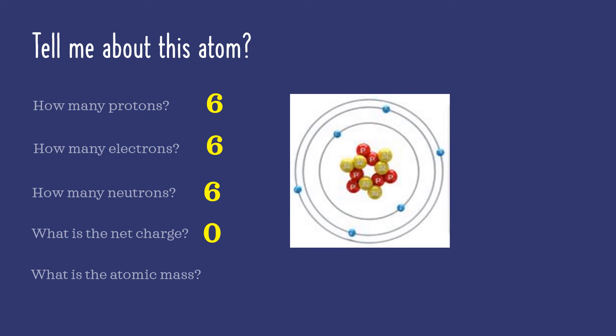Here's a new question. What is the atomic mass of this atom? The atomic mass is the number of protons plus the number of neutrons. So in this example, there are six protons plus six neutrons, so the atomic mass is 12.